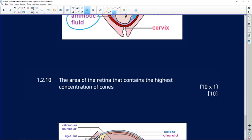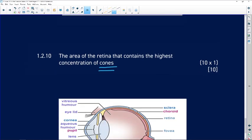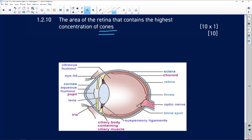The area of the retina that contains the highest concentration of cones. And remember, the cones are there for your colour vision. And that would be the direct focal point of the lens and it is called the fovea. Sometimes in the textbooks it's called the yellow spot, but its correct biological term is fovea.